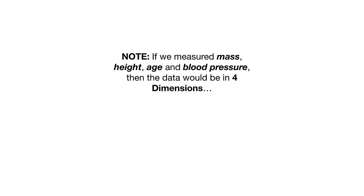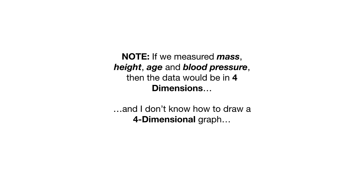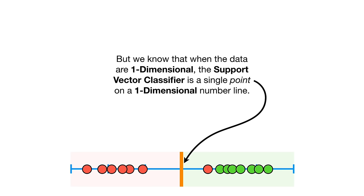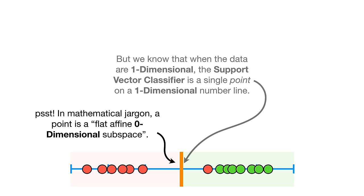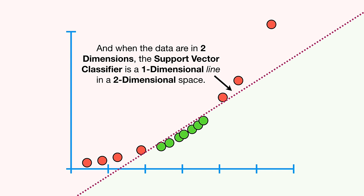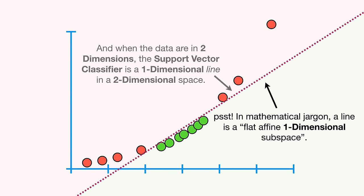If we measured mass, height, age, and blood pressure, then the data would be in four dimensions — and a four-dimensional graph can't be drawn. When the data are one-dimensional, the support vector classifier is a single point, which in mathematical jargon is a flat affine zero-dimensional subspace. When the data are in two dimensions, the support vector classifier is a one-dimensional line in a two-dimensional space — in mathematical jargon, a flat affine one-dimensional subspace.